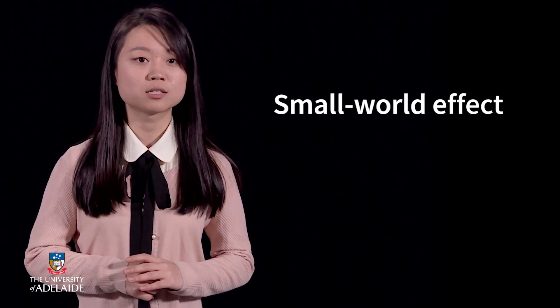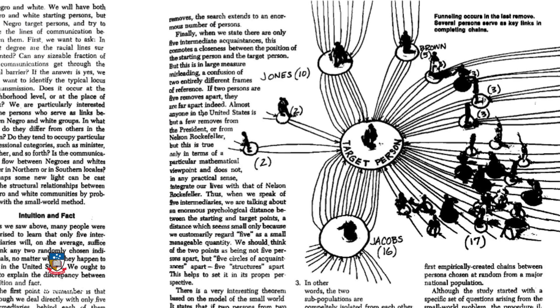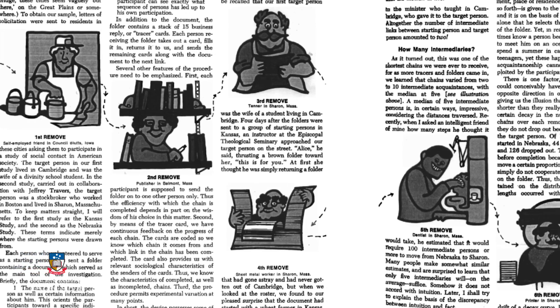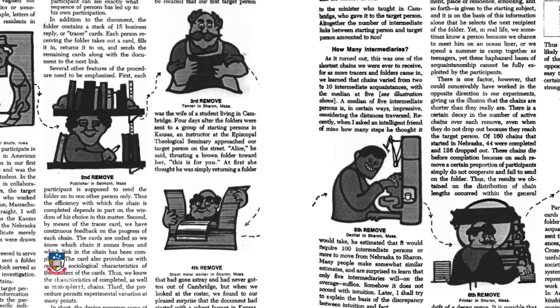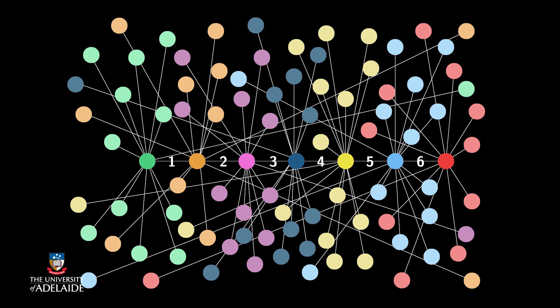The first feature is called the Small World Effect. Dating back to 1967, Stanley Milgram, an American social psychologist, described an experiment about posting letters from one person to another person through known acquaintances. From this experiment, he discovered that many pairs of apparently distanced people are actually reachable through a very short chain of intermediate acquaintances.